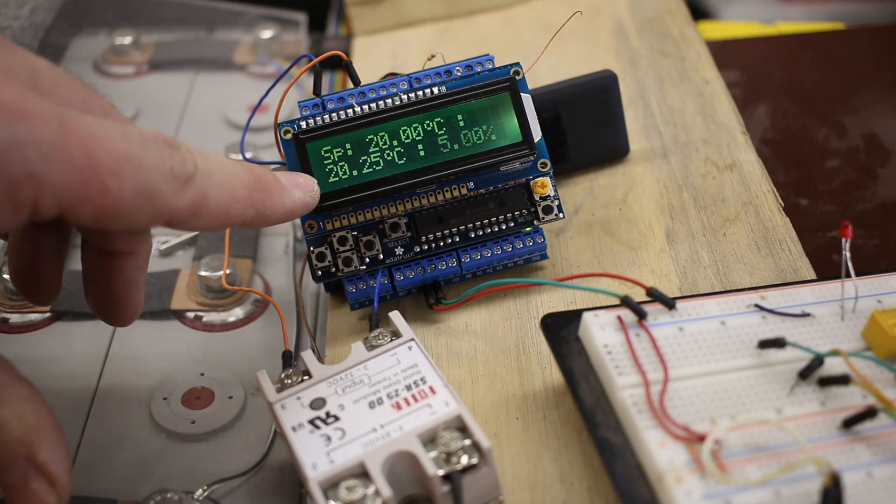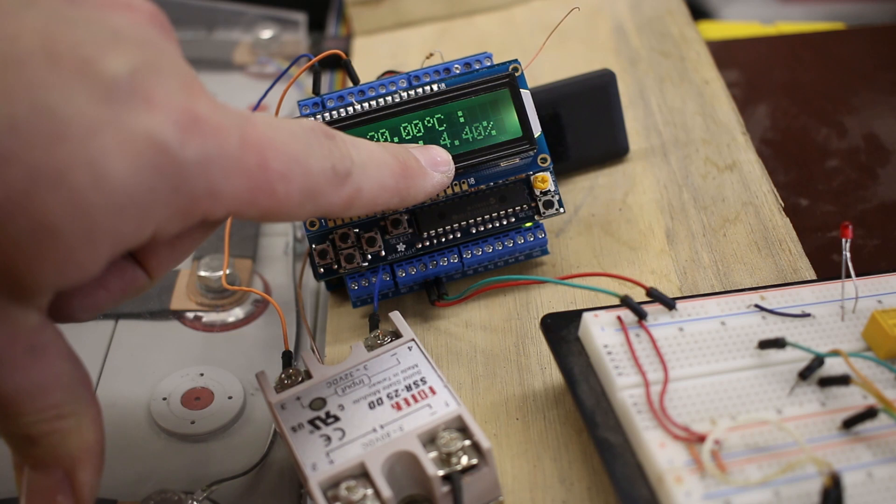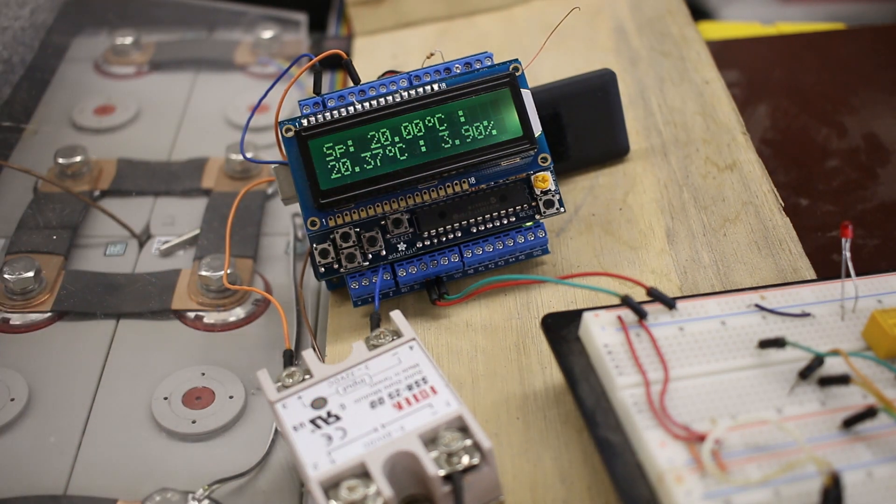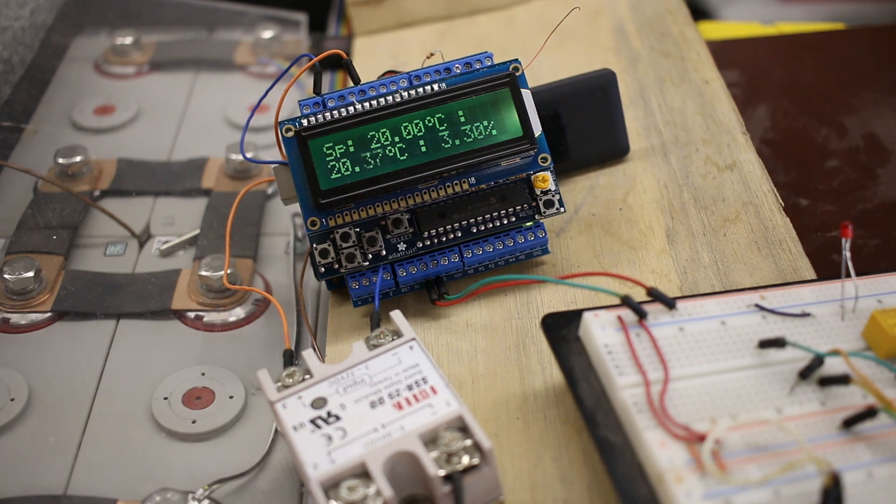And you can see the percentage of the time, the percentage of the 10 seconds that the relay clicks in is down to four percent and it just keeps dropping here, see that. So as it gets closer, the amount of time the relay goes on reduces so that it doesn't overshoot. It prevents that thermostat issue where it overshoots and then undershoots, just up and down, up and down.